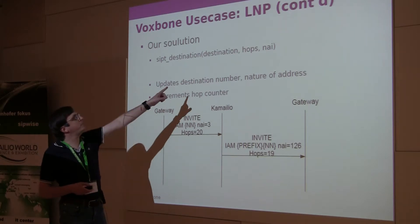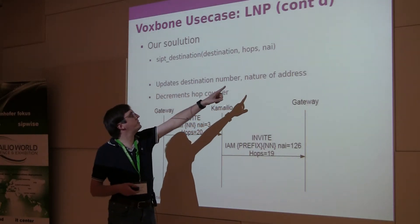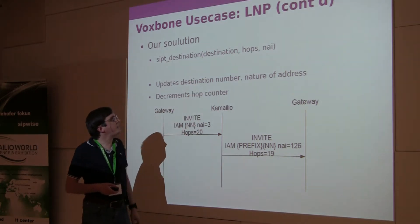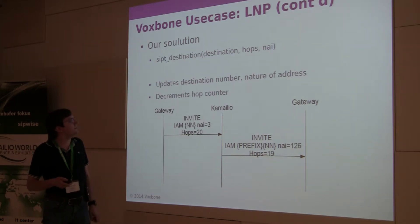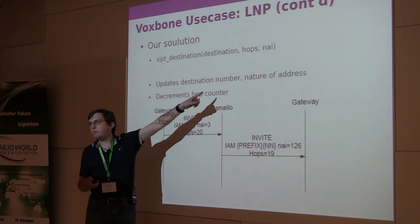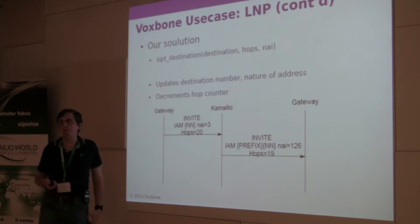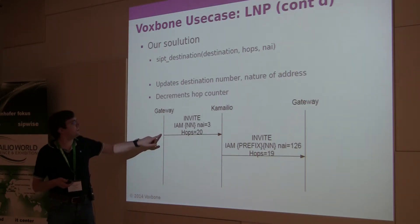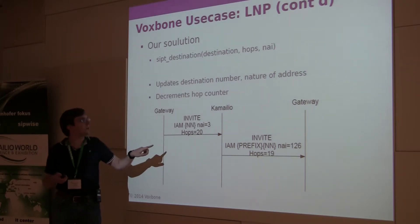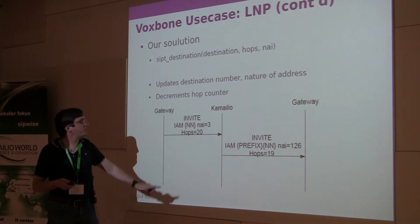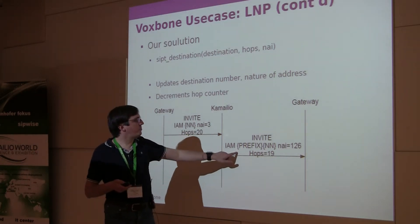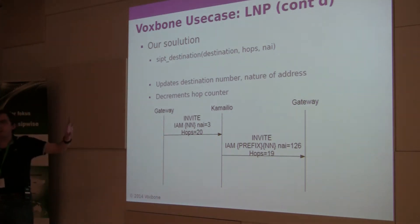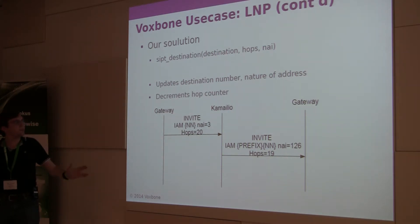What we implemented was a function called SIPT_destination, where you can add the new destination telephone number, hops, and the nature of address indicator. It rewrites the called party number to the destination. If there is no hop counter in the SS7 message, it initializes it to the value of hops; otherwise it decrements the hop counter as a proper SS7 switch would, and sets the nature of address indicator to whatever you want. From our incoming SS7 gateway, the IAM message arrives with nature of address 3 (national number) and hops 20. We forward it on, adding the porting prefix and setting the nature of address to indicate a ported number, decrementing the hops counter. As far as SS7 network work is concerned, Kamailio is a full, proper SS7 switch.